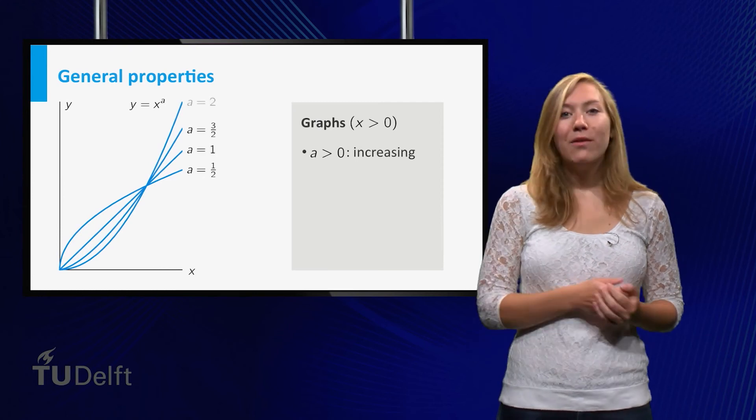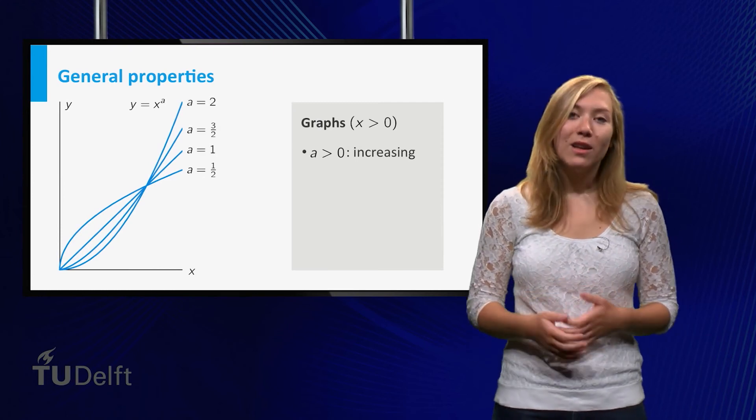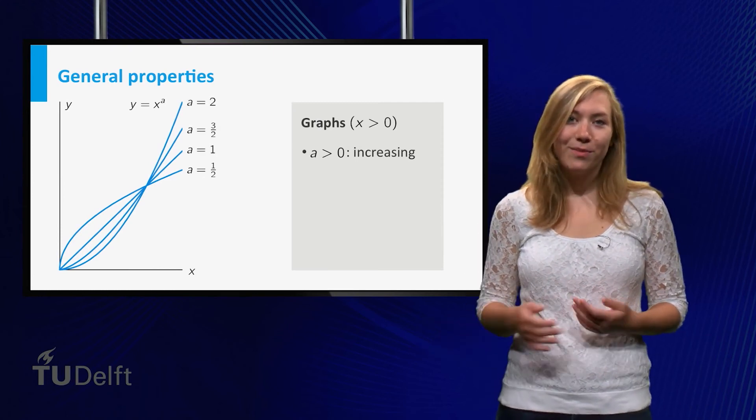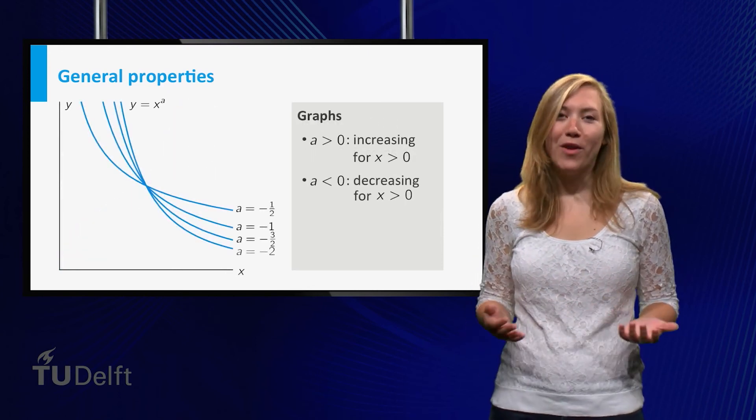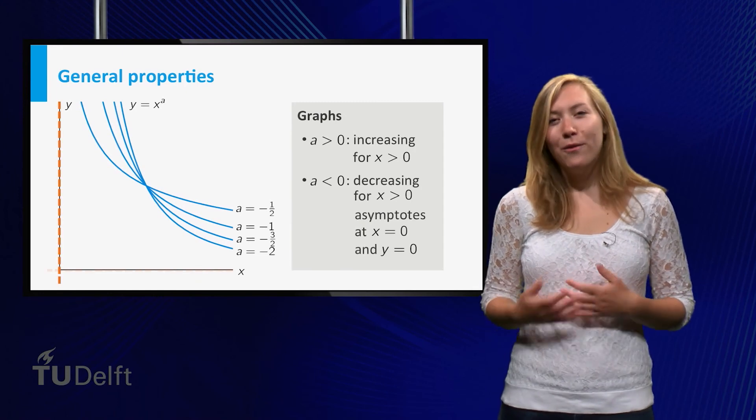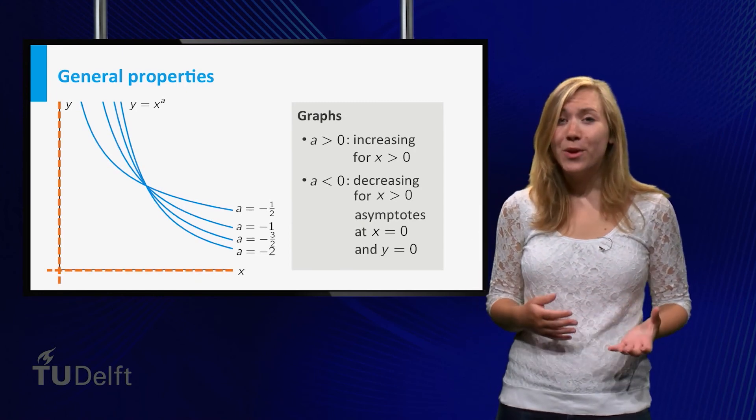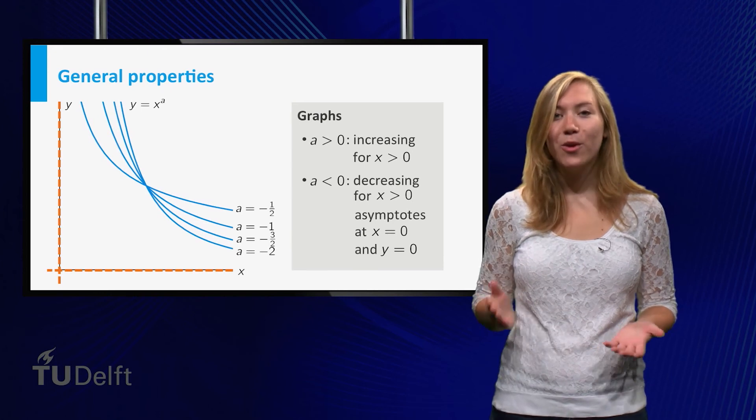As for the graphs, if a is positive, they are increasing for positive x. If a is negative, the graph decreases for positive x. Furthermore, in that case, the graphs have asymptotes along the horizontal and vertical axes.